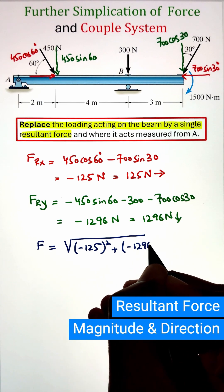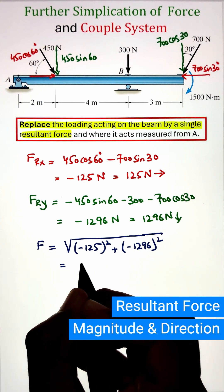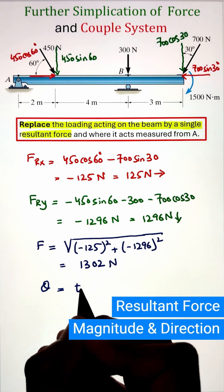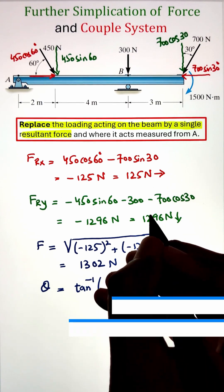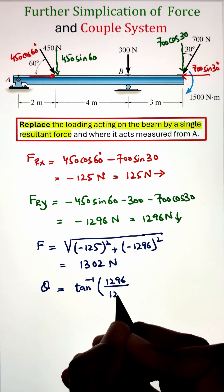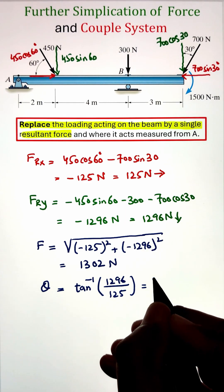Next to figure out the angle we can utilize our tan inverse function by taking the tangent inverse of the y component magnitude divided by the x component magnitude. This gives us an angle of 84.5 degrees. Now since both the x component and y component has negative sign, it means that it lies in the third quadrant.